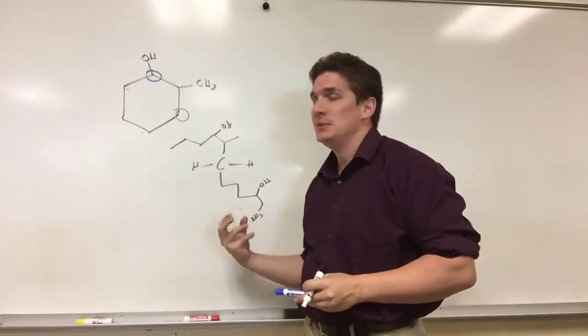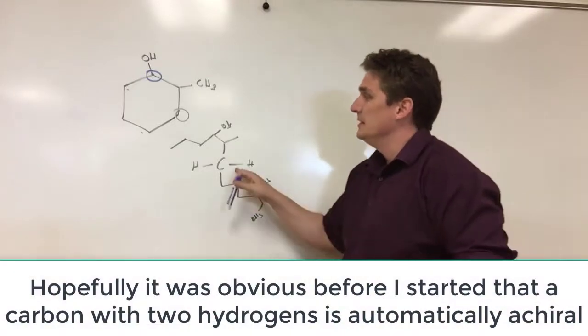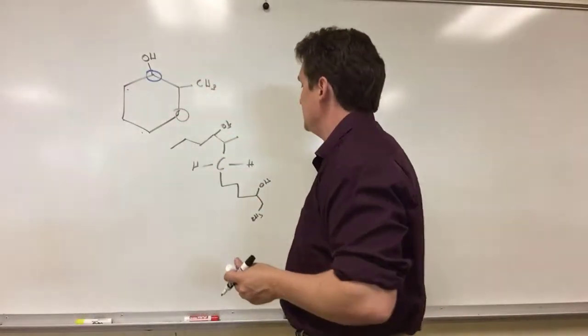But we're kind of building to the more complicated one, which is the blue one here. This is obviously achiral because we have two hydrogens. What about the one that contains the alcohol, the OH group?